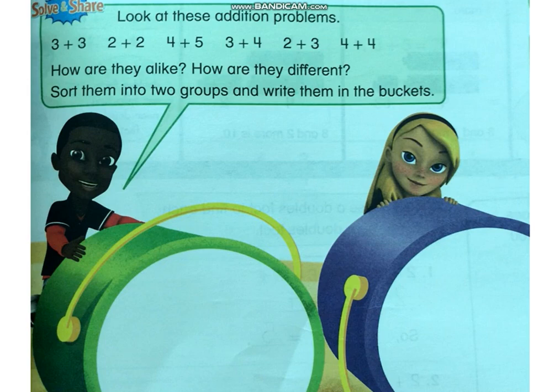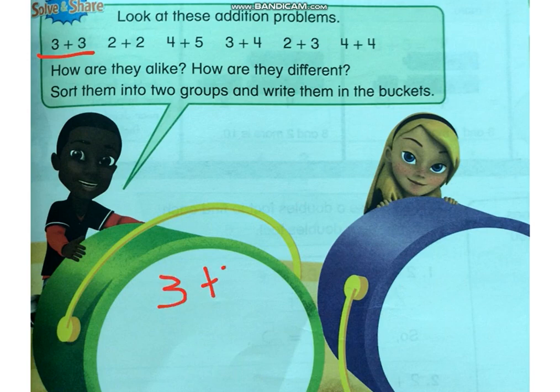Let's take a look together. The first number, you can see 3 plus 3. Are they alike? Yes, they are. They are a double number — they're the same. So we're going to put it in the boy's bucket: 3 plus 3.